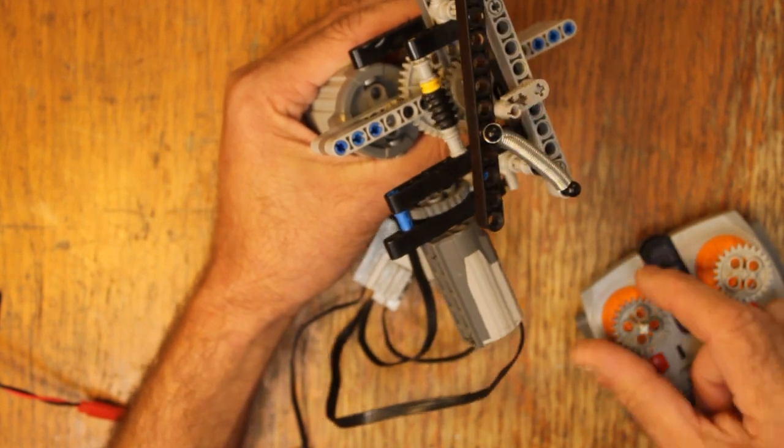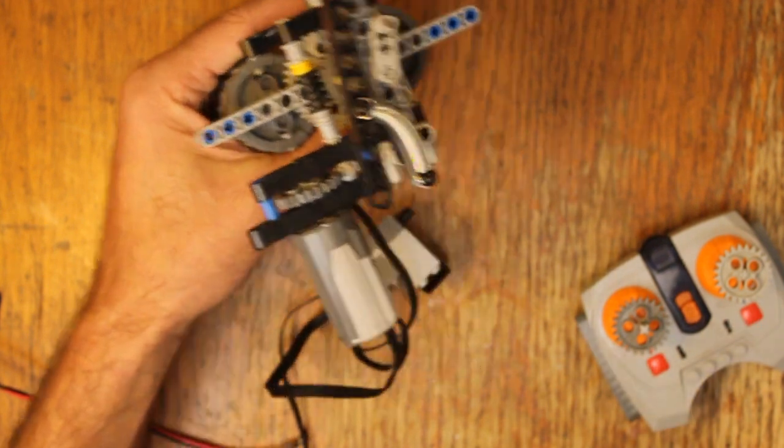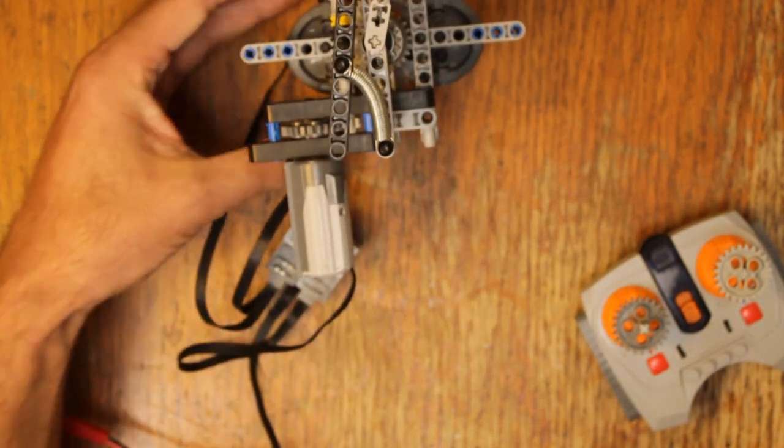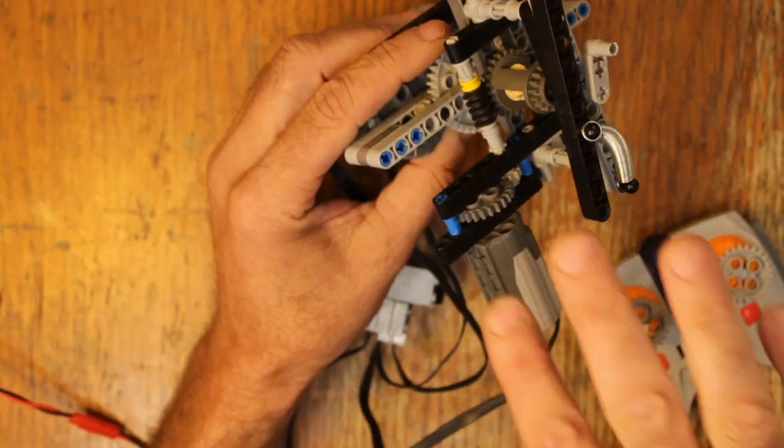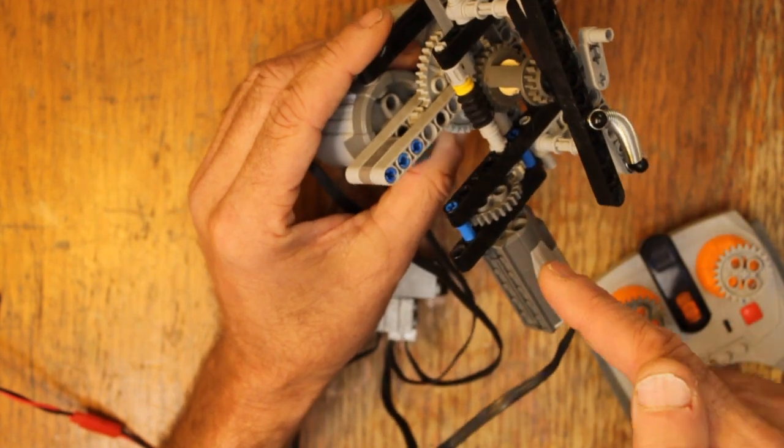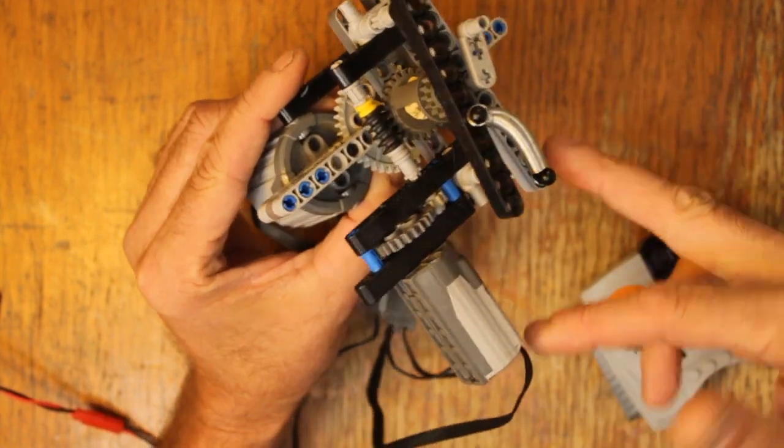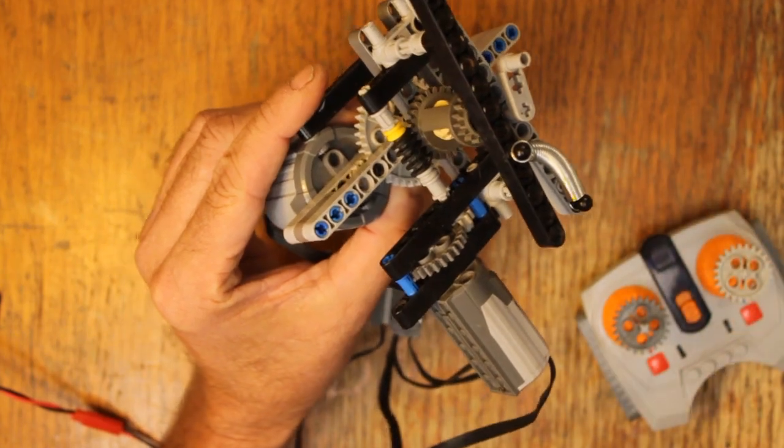So we can add torque to the system, but the variator has to be strong enough to do that. As a matter of fact, there's nothing about this that says that the variator needs to be on this side of the differential. You could swap places and it would do the same thing.